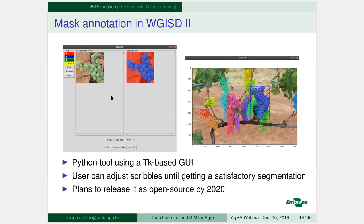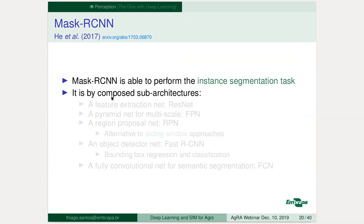We have plans to release this tool as an open source tool next year — send me an email if you are interested. Of course, you can also use other tools like VIA; there are a lot of different annotator applications available right now. If you have a dataset, you can now choose an architecture. In our paper, we tried the YOLO network for object detection, and also the Mask-RCNN network, which is a very interesting architecture for instance segmentation tasks.